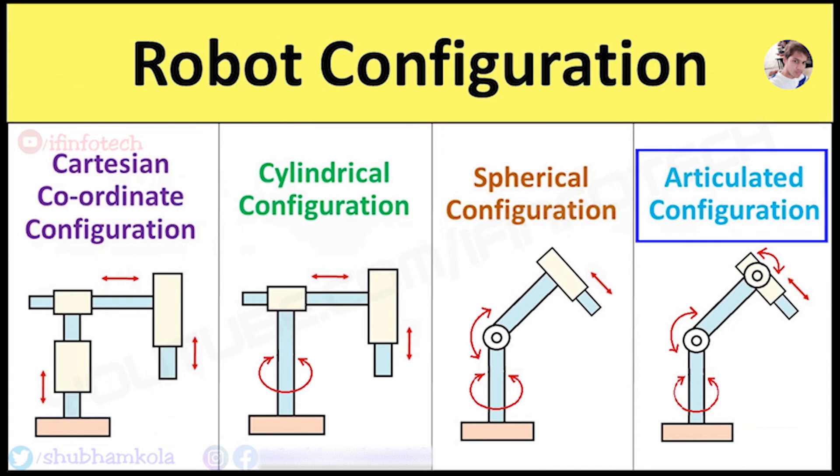Next is Articulated Configuration. It consists of 3 revolute joints and 1 prismatic joint. When the arm rotates about all 3 major axes, the result is Articulated Configuration, also called Joint Arm Configuration. The arm looks like a human arm. It has 2 rotary joints, shoulder and elbow, about their respective horizontal axes. The third rotary joint is about vertical base axis.